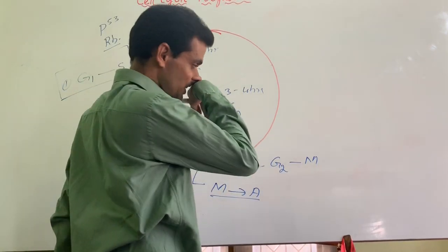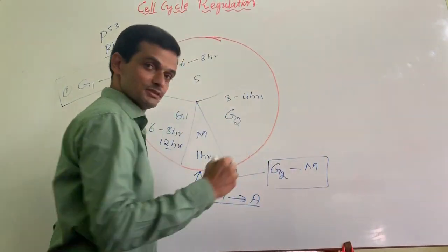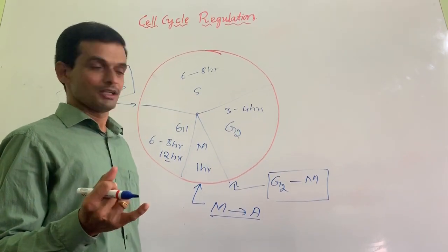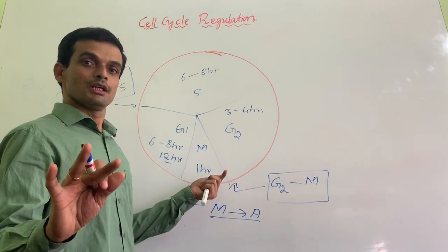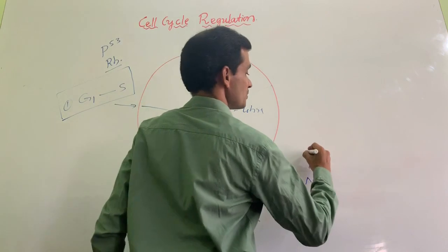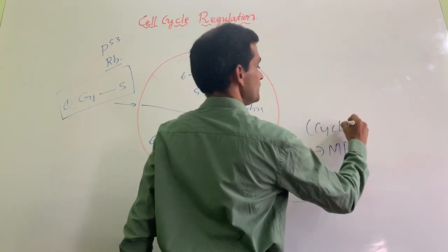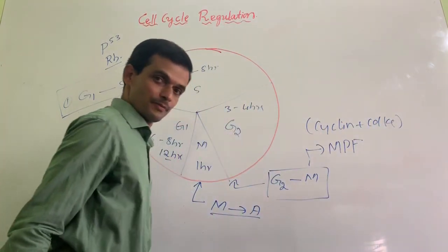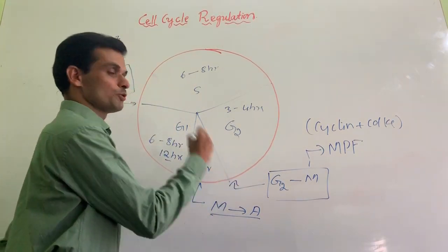Look at the second checkpoint, G2-M checkpoint. This will make sure that the cell has synthesized DNA, the cell has completed growth, and the cell is ready to enter M phase. It should have sufficient maturation promoting factor. It is the combination of cyclin and cyclin-dependent kinases. It is controlled over here. It is regulated over here. It means the cell cycle can be stopped over here.